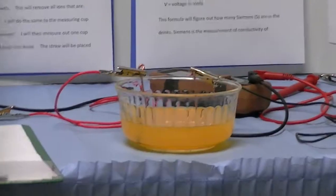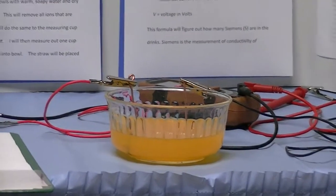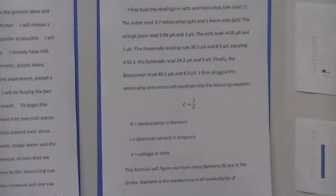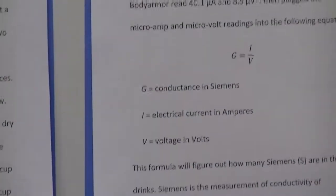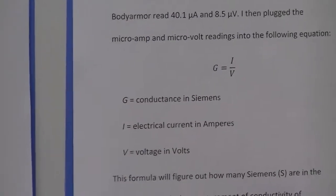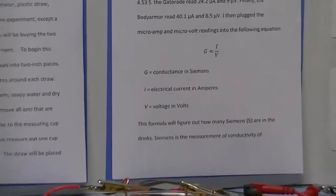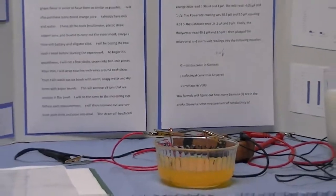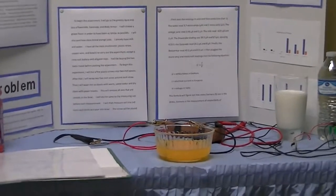I then took those two readings and plugged them into the formula, G equals I/V, where G is the symbol for Siemens, which is what electrolytes are measured in. The I was the amps and the V was the volts, because Siemens equals amps divided by volts. I took the readings in volts and amps, and then I plugged them into the formula and got my final results.